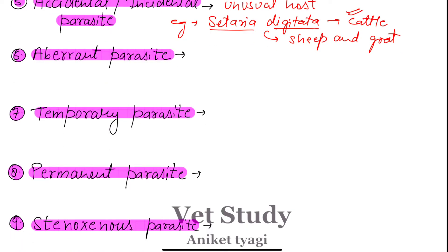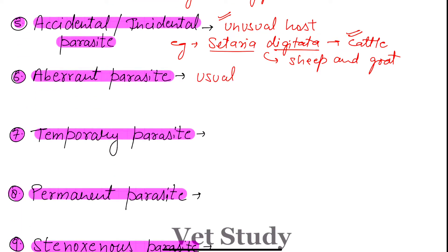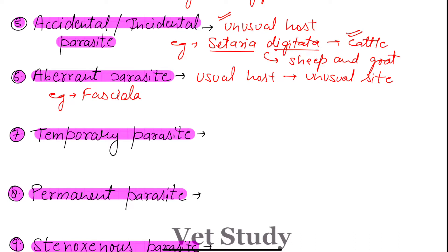Next we have the aberrant parasite. Aberrant parasite involves the usual host but an unusual site. This means the parasite reaches a site that is not normal for it — it migrates to a place where it cannot survive properly. For example, Fasciola, which is the liver fluke, has the liver as its usual site. But it can also go to the lungs. When it is in the liver, it is a normal parasite; when it goes elsewhere, it is aberrant.